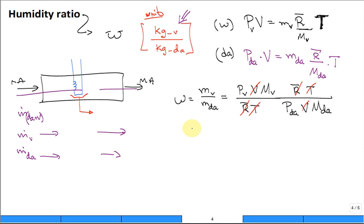So what we're going to show is the molar mass of the vapor divided by the molar mass of dry air times the partial pressure of the vapor divided by the partial pressure of dry air. Say, what's the molar mass of water vapor?